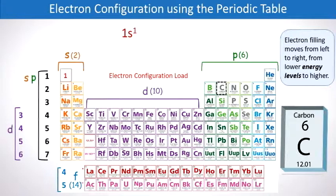And this is how we do it. To fill in the 6 electrons for carbon, we start with a 1s1, as shown here on the periodic table, and then a 1s2.